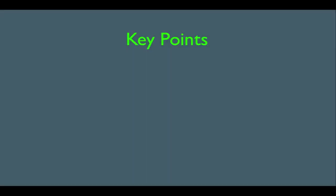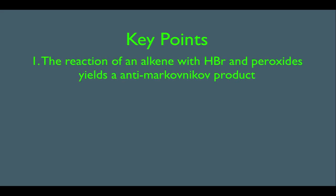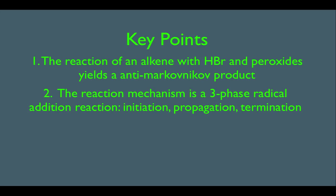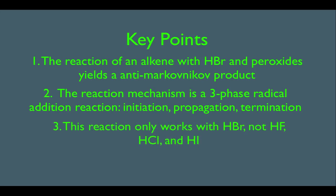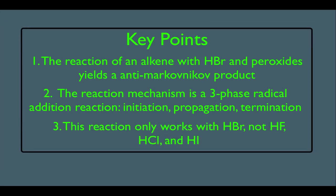In this online lecture, we're going to discuss the radical reactions of alkenes. What we're going to learn is: number one, the reaction of an alkene with HBr and peroxides yields an anti-Markovnikov product. Number two, the reaction mechanism is a three-phase radical addition reaction, which involves initiation, propagation, and termination. And number three, this reaction only works with HBr, not HF, HCl, or HI.